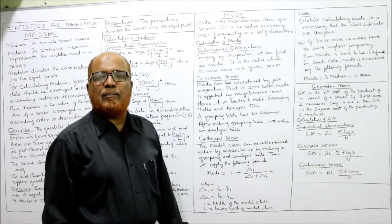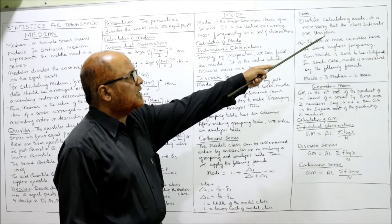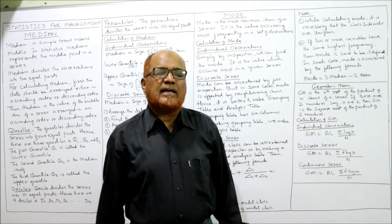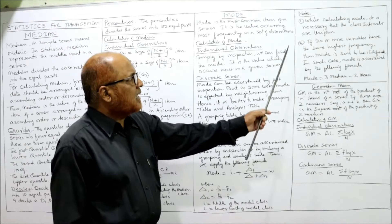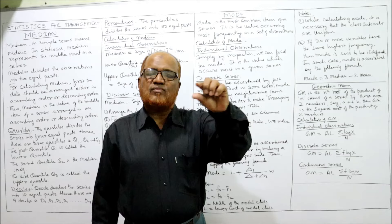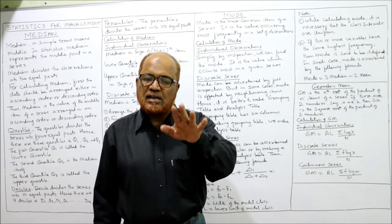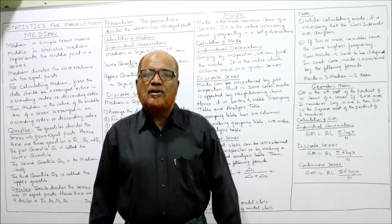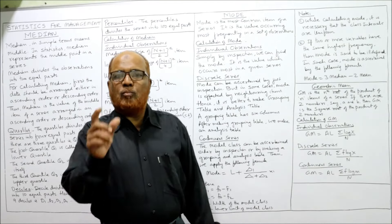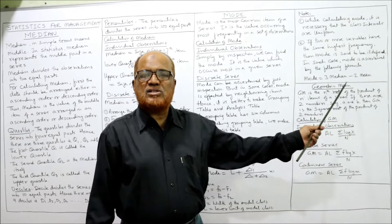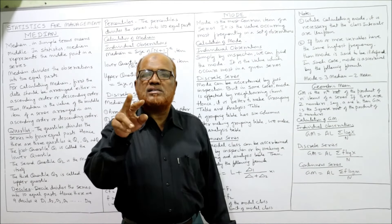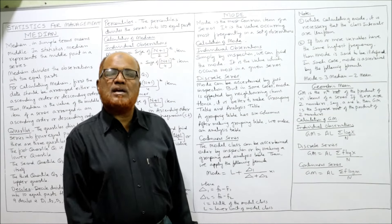Two important points when calculating mode: First, all class intervals must be uniform (equal). If not uniform, convert them to equal class intervals before calculating. Second, if two or more classes have the same highest frequency, the mode is said to be ill-defined. In that case, use the alternative formula: Mode = 3 Median − 2 Mean. This formula is applied only when the mode is ill-defined.